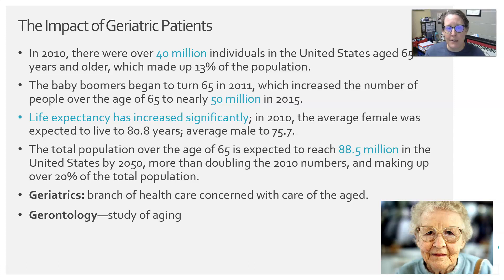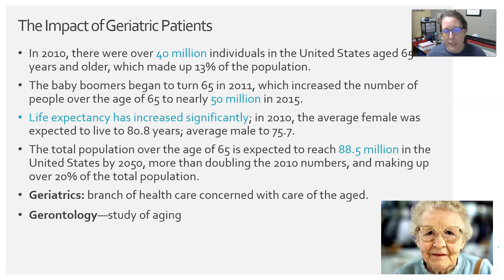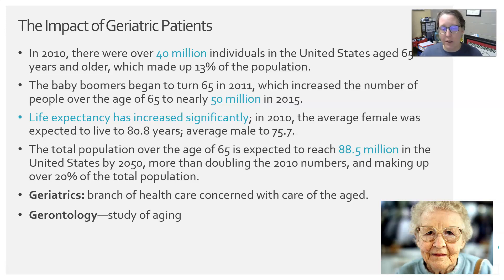Life expectancy has increased significantly. In 2010, the average female was expected to live to 80.8 years and the average male to 75.7 years. The total population over the age of 65 is expected to reach 88.5 million in the U.S. by 2050, more than doubling the 2010 numbers and making up over 20 percent of the total population — a big impact on health care.